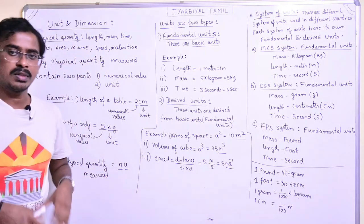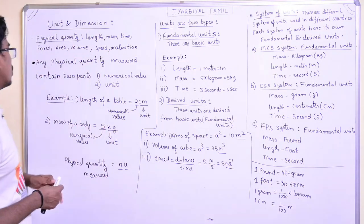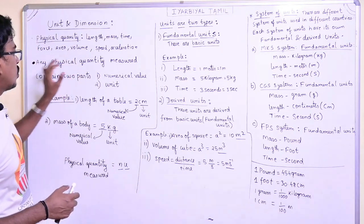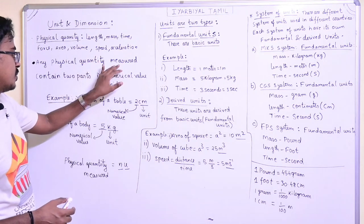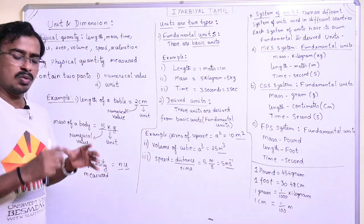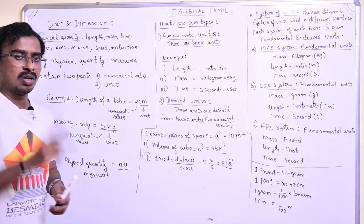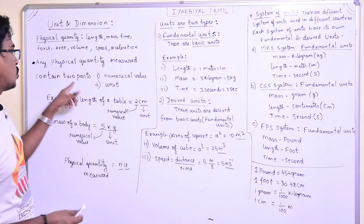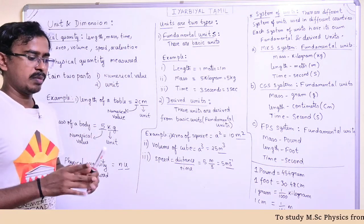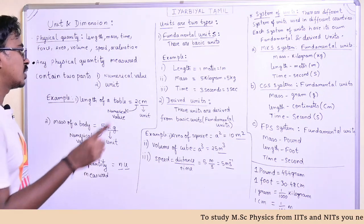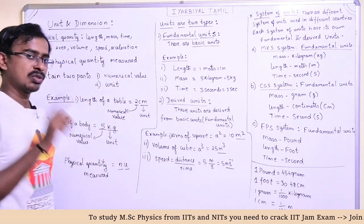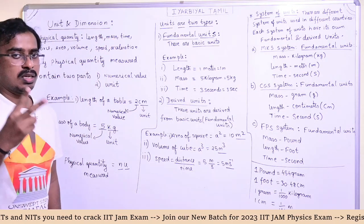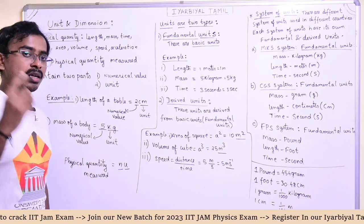So, I will tell you about the quantities. What physical quantity is measured contains two parts. We have two parts: how much — the numerical part — and what physical quantity — the unit. This is the first thing. This is the physical quantity, and when we measure it, we are involved in two ways. One is the numerical part, the other one is the unit.